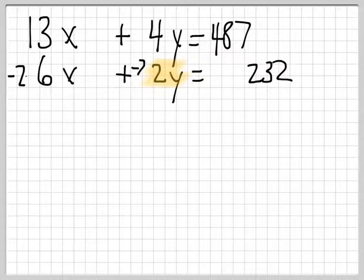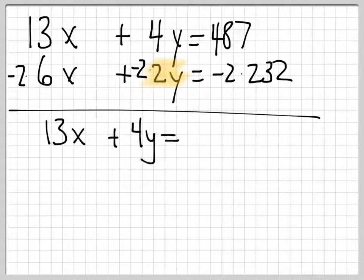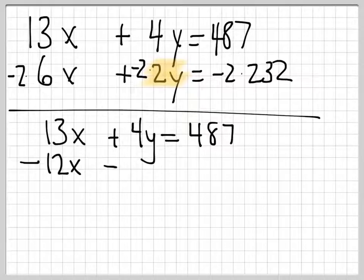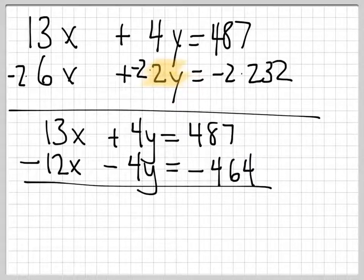Multiply everything by negative 2 and then rewrite. We get negative 12x minus 4y equals negative 464. So we're going to combine the two lines. 13 take away 12 is 1. Look, we got x by itself. And 464 from 487 is 23.